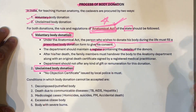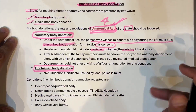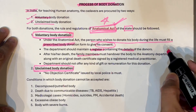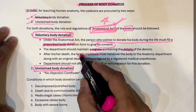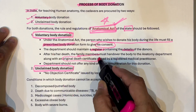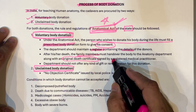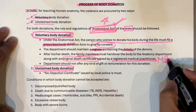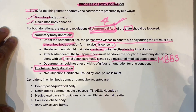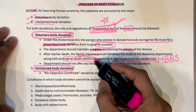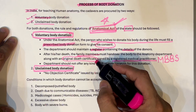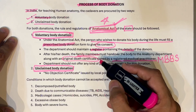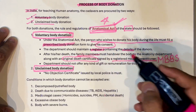After the death of this person, the family member should produce a valid death certificate, and this certificate should be signed by a registered medical practitioner — that means a person who is MBBS. This death certificate is required because deaths due to homicide or suicide are not acceptable as a voluntary body donation.